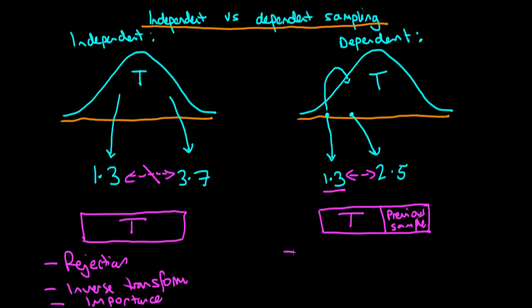For dependent sampling, the predominant method is known as Markov chain Monte Carlo, often abbreviated as MCMC, which is very common in applied Bayesian inference. But there are also other dependent sampling methods, for example sequential Monte Carlo.